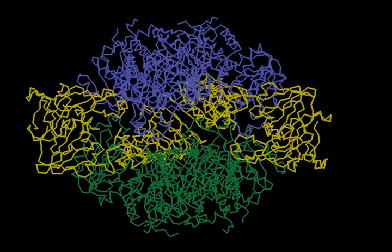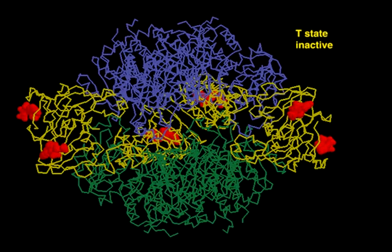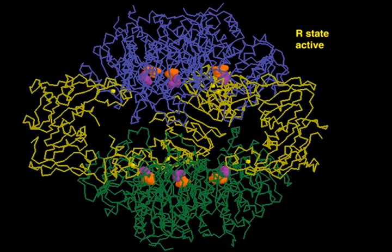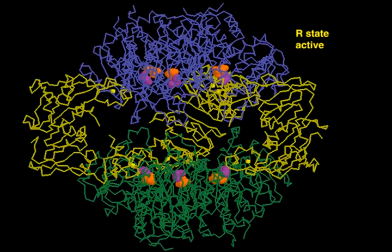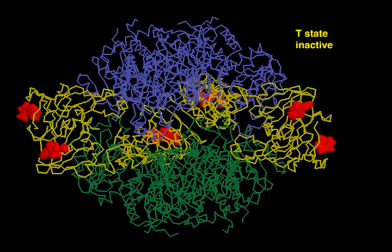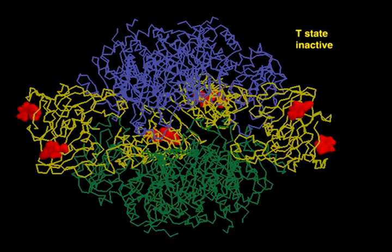ATCase alternates between two conformational states: an inactive tense, or T-state, and a catalytically active relaxed, or R-state. ATCase is inactive when the inhibitor cytosine triphosphate is bound to its regulatory subunits. Binding of the two substrates, carbamyl phosphate and aspartate, to the catalytic subunits switches the enzyme into the active R-state.